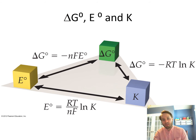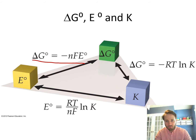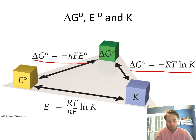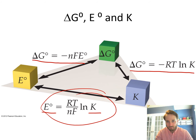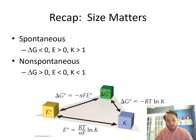We can think about the different relationships we have: the relationship between cell potential and Gibbs free energy, and in thermodynamics the relationship between delta G and the equilibrium constant K. Using those two relationships, you can show that the standard cell potential E° is related to the equilibrium constant K. So all of these things are interrelated: delta G, E°, and K.